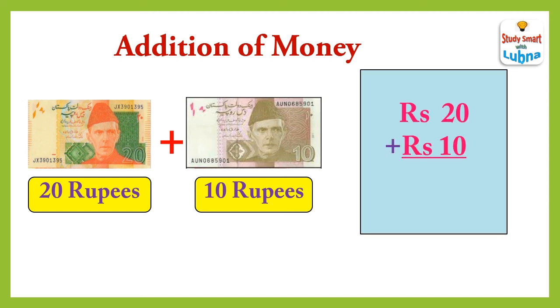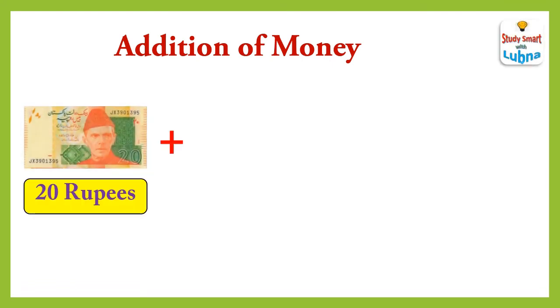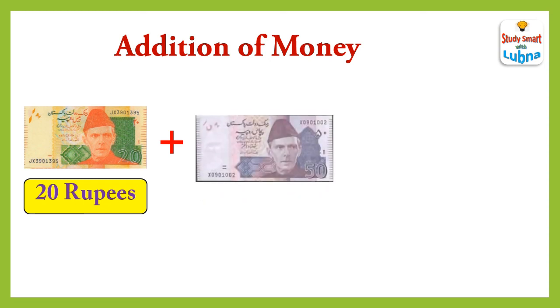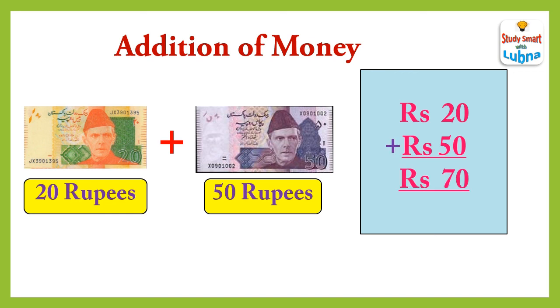When we add 20 rupees note with 50 rupees note, what will we get? Let's see. Rupees 20 plus rupees 50 — when we add them, we will get rupees 70.